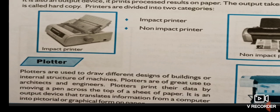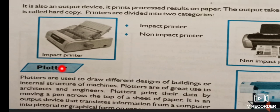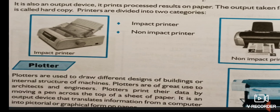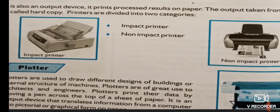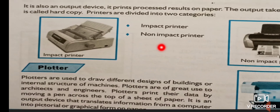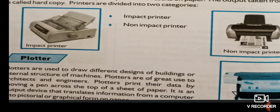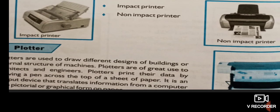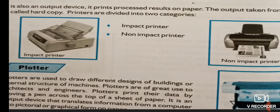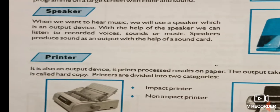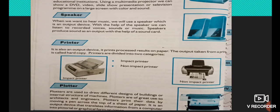The last output device is the plotter. A plotter is used to draw different designs of buildings or the internal structure of machines. It is mostly used by architects and engineers to design building structures. It looks like a printer machine, and these are among the few output devices.